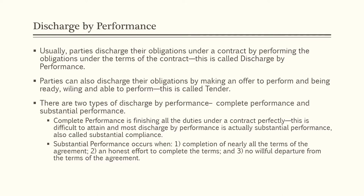A good example of substantial compliance is if Betty has ABC paint her house tan with brown trim, but ABC paints the trim cream — this may be substantial compliance or substantial performance. However, the painter will either have to come back at his own cost to correct the error, or if Betty sues him in court, compensate Betty for having to hire another contractor to paint the trim the correct color.